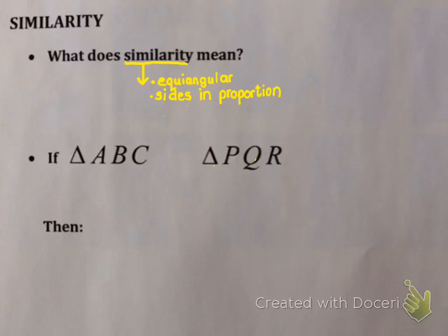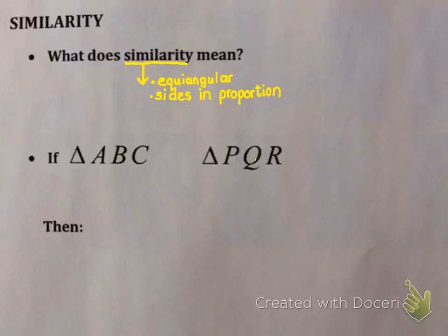Similarity also means something else. In addition, your shapes have to be equi-angular and your sides have to be in proportion. So if two shapes are similar, you can assume they're equi-angular and the sides are in proportion. If you're trying to prove shapes are similar, you have to prove both — equi-angular and sides in proportion. It's two things you have to show.